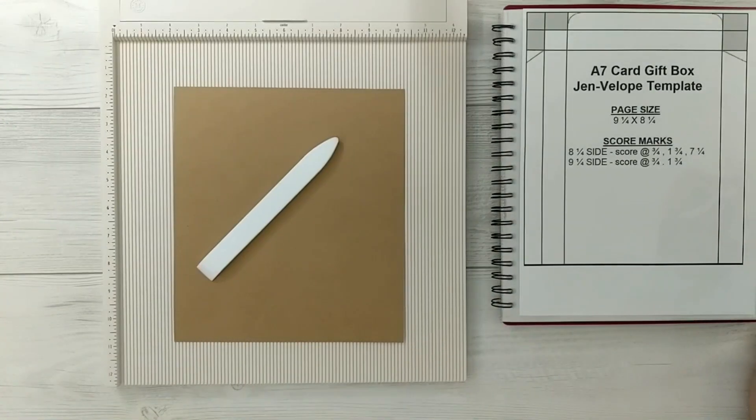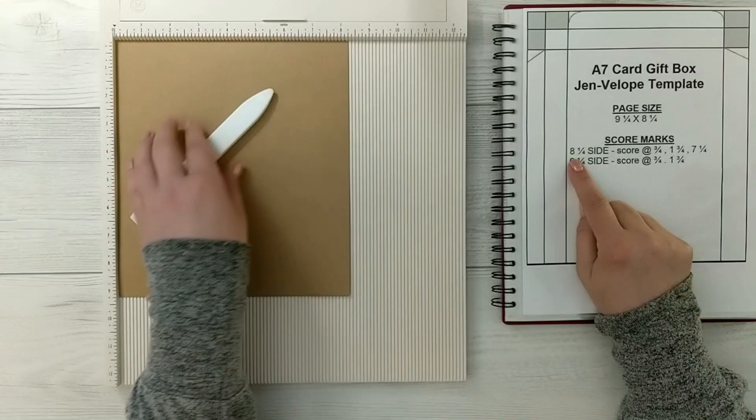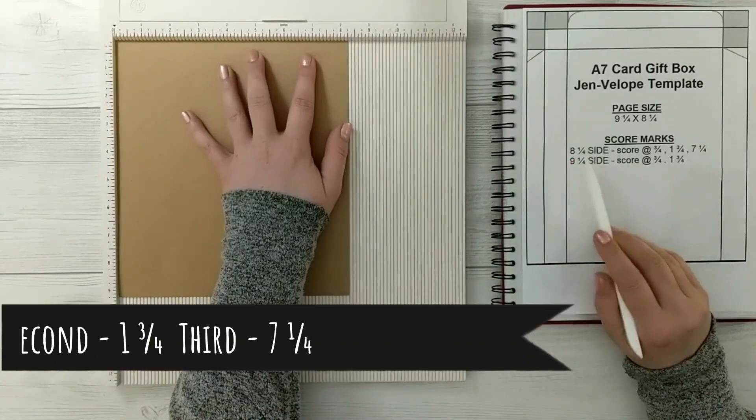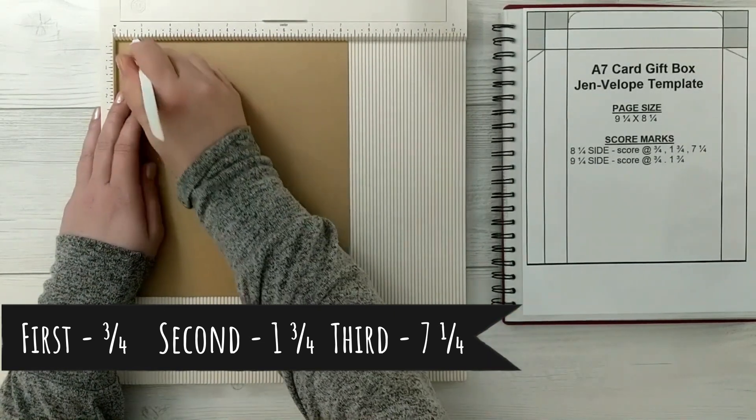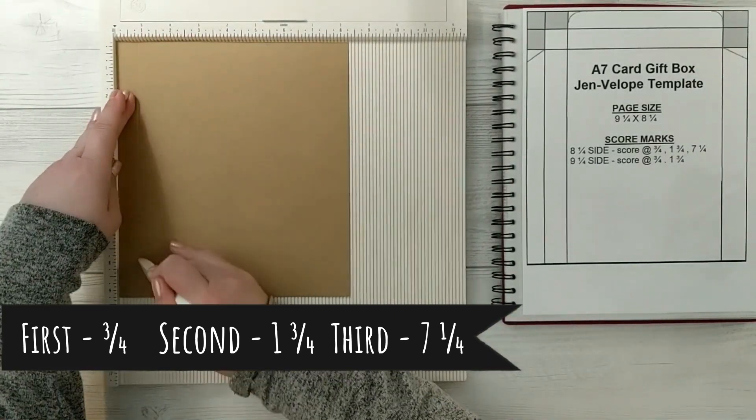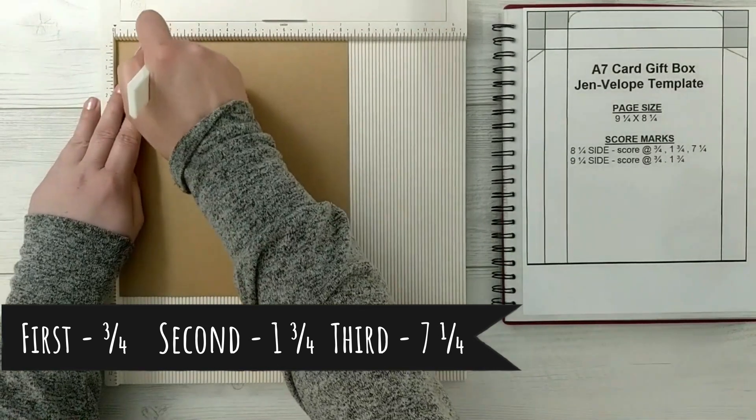Okay, with the first piece of cardstock we'll put it into the scoreboard on the eight and a quarter inch side. So your first score will be at three quarters of an inch, one and three quarters of an inch, and seven and a quarter inch.